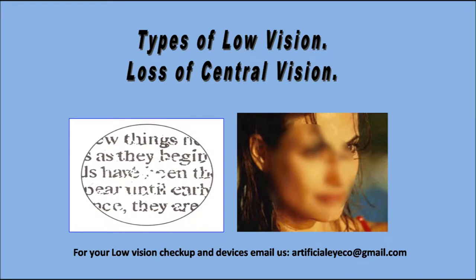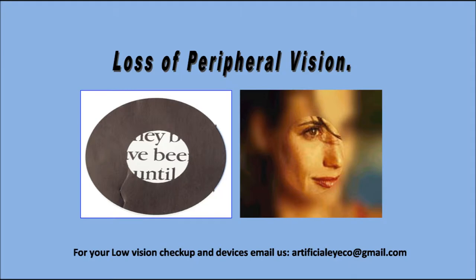Types of low vision. One of the types is loss of central vision. As you can see in the image, the central part of the image is lost. Another type is loss of peripheral vision — in this case, the peripheral vision is blurred whereas the central vision is clear.